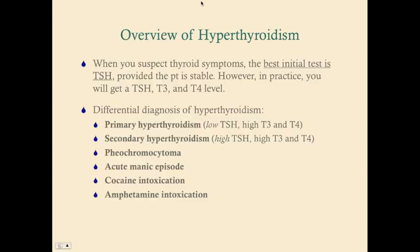When you suspect hyperthyroidism or hypothyroidism, the best initial test is TSH — it will rule it in or rule it out right away. If the patient indeed has hyperthyroidism, you should find high T3 and high T4, along with either a low or high TSH. Generally, thyroid function panels include TSH, T3, and T4 together.